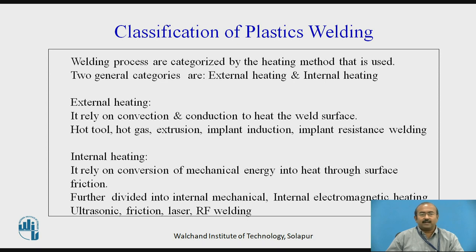External heating — what exactly does external heating mean? It relies on convection and conduction to heat the weld surface. For example, hot tool, hot gas, extrusion, implant induction, and implant resistance welding are some examples of external heating welding processes used for plastics.